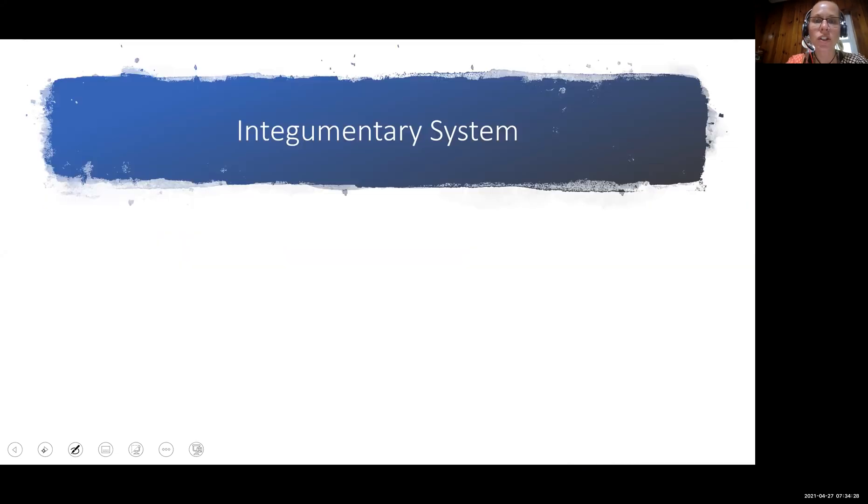So let's start with what we call the integumentary system. And as we look at each body system, we want to look at what we would call our anatomy, which is talking about structures, and then our physiology, which is talking about job. When we talk about the integumentary system, we'll see that this consists of the skin, the hair, the nails, and the glands.